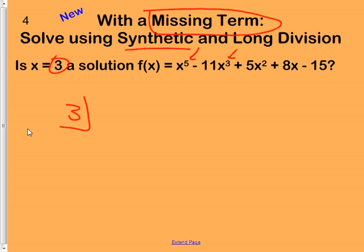Okay, so we're talking about synthetic division, and this time we're talking a lot more about missing terms. Like here we have a 5, here we have a 3, but there's no x to the 4th term, so I put 0 for that.